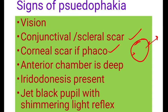And there is a jet-black pupil with a shimmering light reflex. This is the cardinal sign of Pseudophakia. When you examine the patient with a torchlight and move the torchlight, you will see the reflex from the pupillary area — that is the shimmering light reflex. So these are the signs of Pseudophakia.